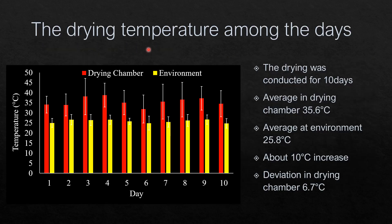You can see the result of our work about the drying temperature across the days. Since we had an initial moisture content of coffee cherries at 70%, we needed about 10 days to dry the coffee cherries until the moisture was below 14%. From this chart, we can see that in the drying chamber we had higher temperature compared to the ambient. The average temperature in the drying chamber was about 35.6 degrees centigrade, while the average ambient temperature was about 25.8 degrees centigrade. The dryer can increase the drying temperature by about 10 degrees centigrade, which is believed to accelerate the drying process.